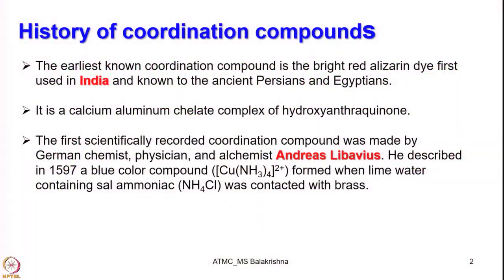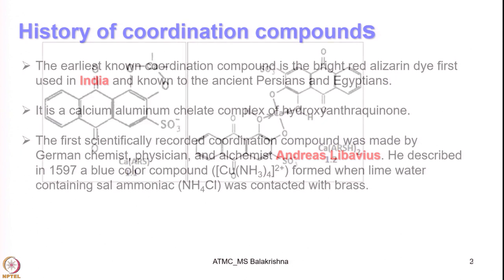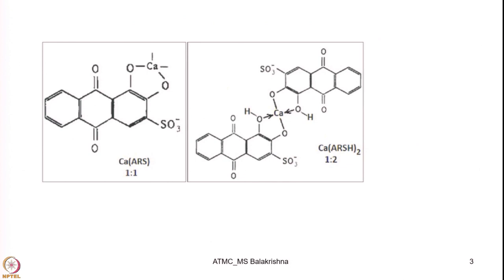Before I proceed further, let me tell you about the history behind this coordination theory. The earliest known coordination compound is the red alizarin dye, first used in India and also known to ancient Persians and Egyptians. It is a calcium aluminate chelate complex of hydroxoanthroquinone — this is how it looks like.